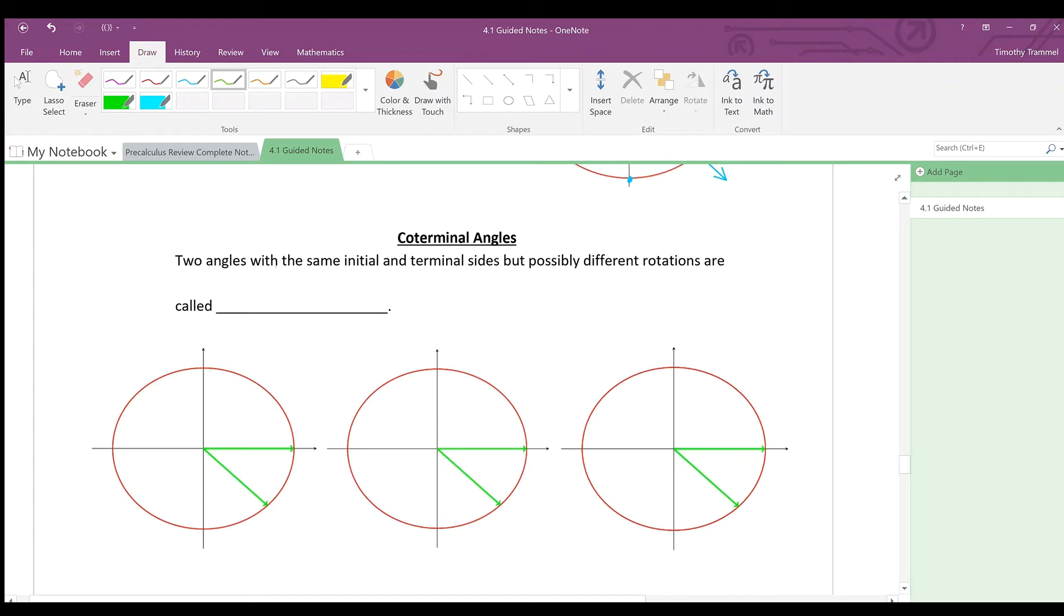Two angles with the same initial and terminal sides, but possibly different rotations are called coterminal. And the idea of them being coterminal is because they have the same terminal side. And we know that they have the same initial side as well because these are in standard position.